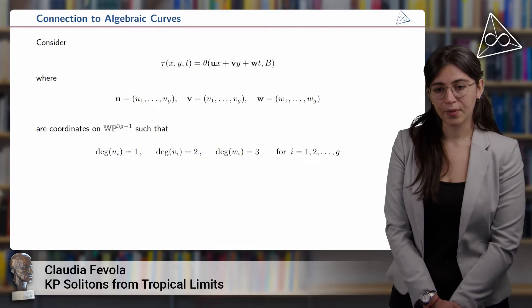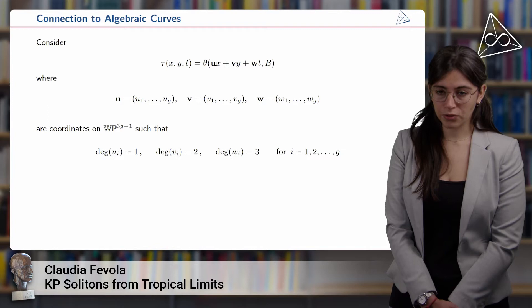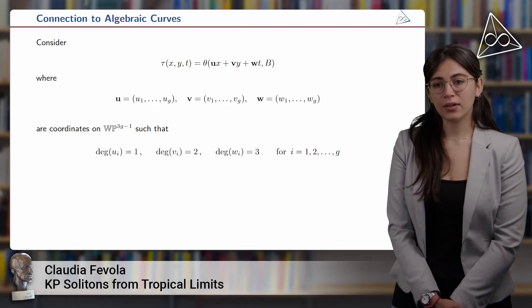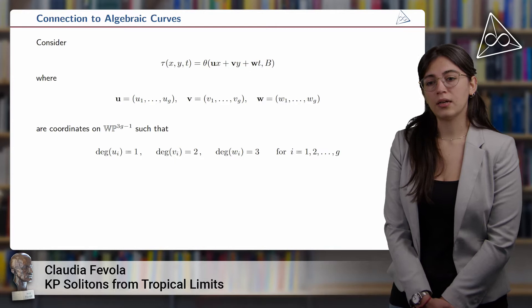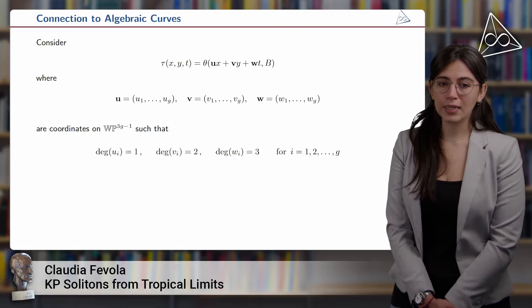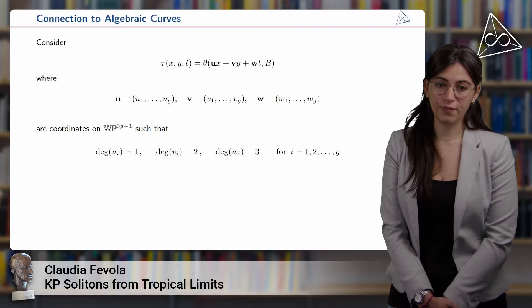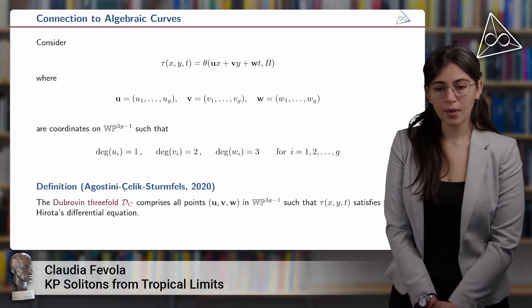How do we construct a curve out of this theta function? We need to parameterize the vector z using three coordinates in a weighted projective space, meaning u, v, and w. We assign degree 1 to the u_i's, degree 2 to the v_i's, and degree 3 to the w_i's.